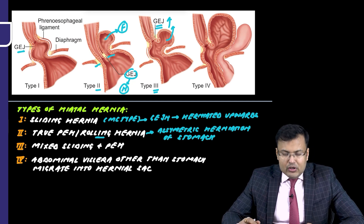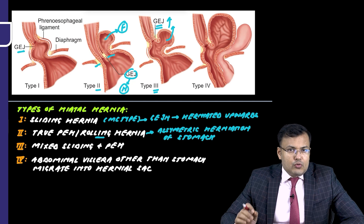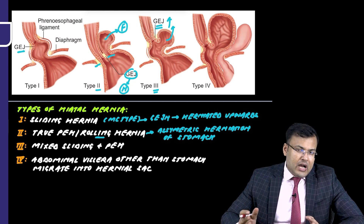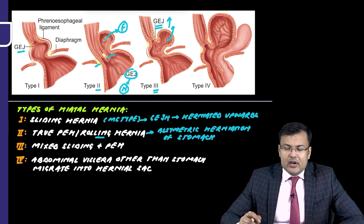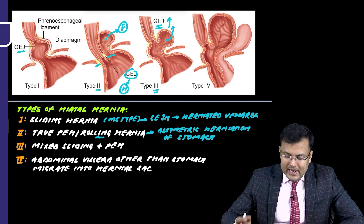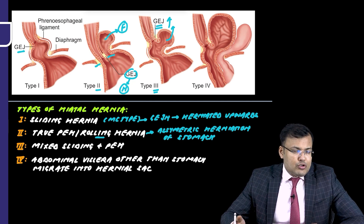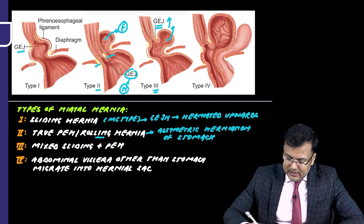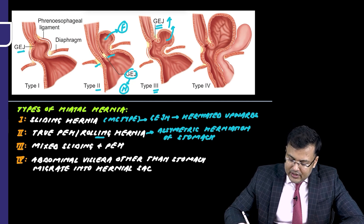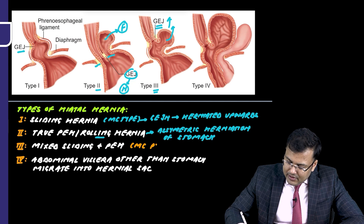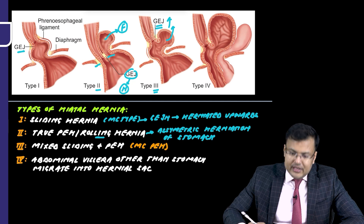Out of types 1, 2, 3, and 4, types 2, 3, and 4 are paraesophageal hernias. A commonly asked question is: what is the most common type? The most common overall is sliding Type 1, and the most common type of paraesophageal hernia is Type 3.